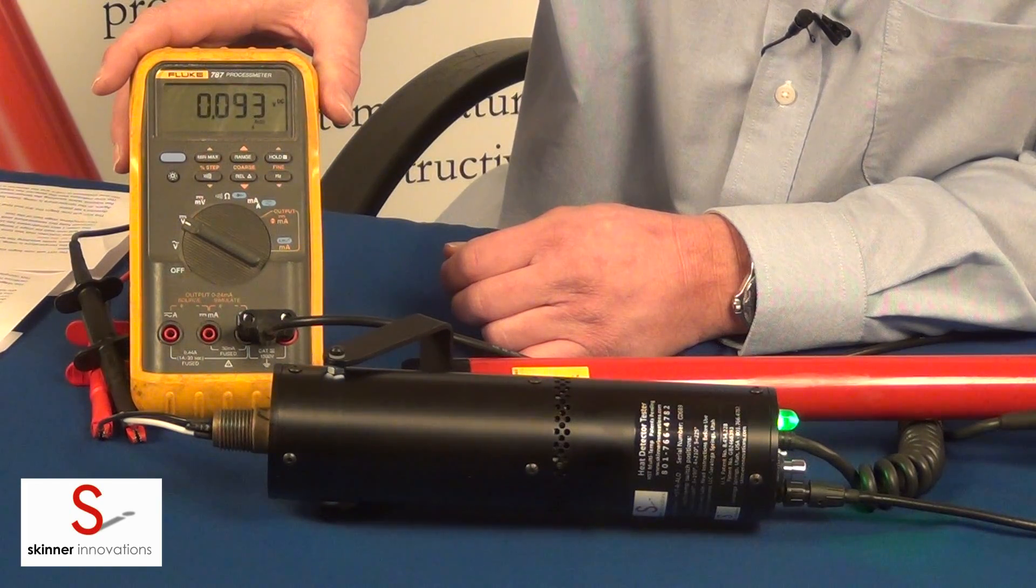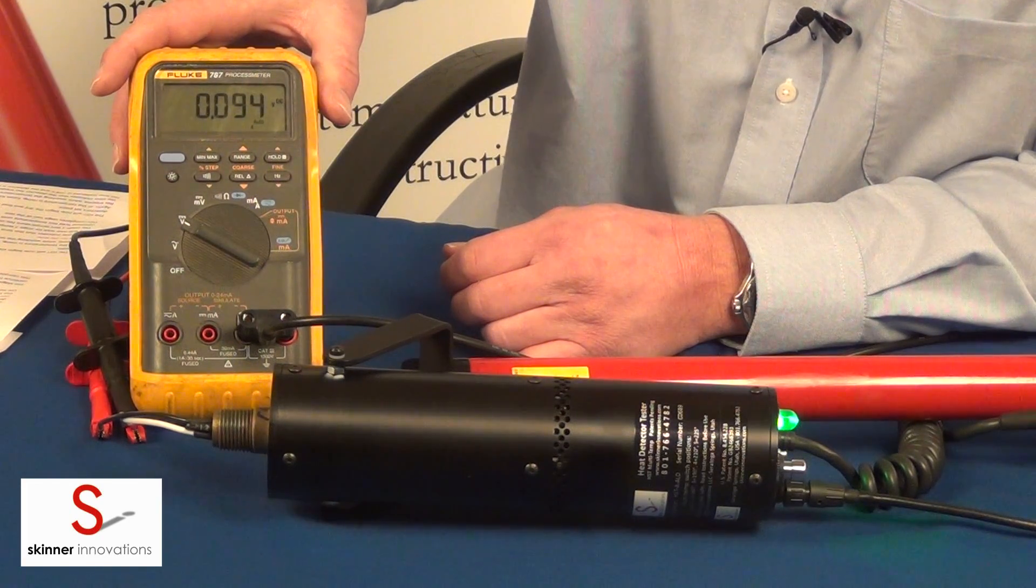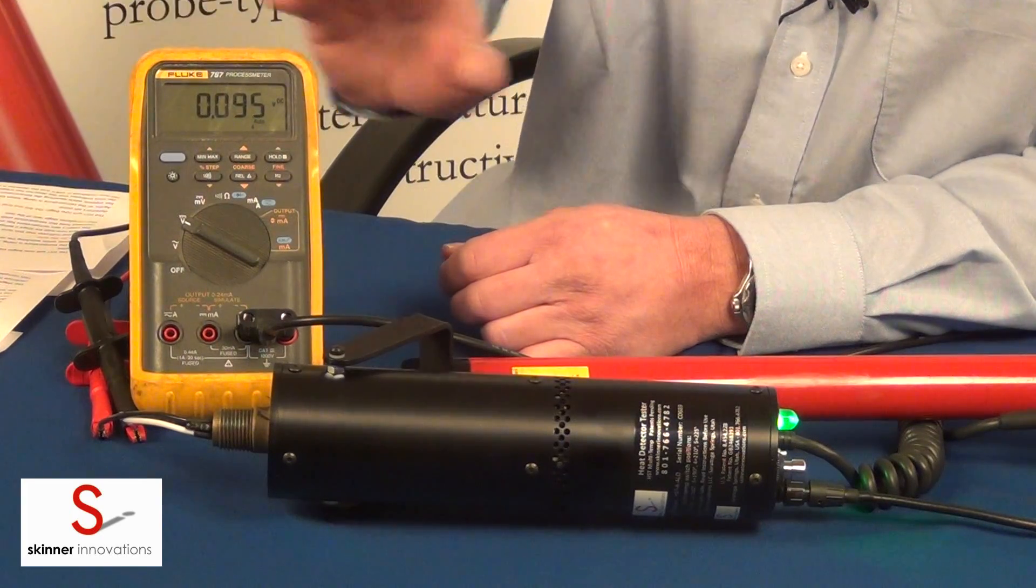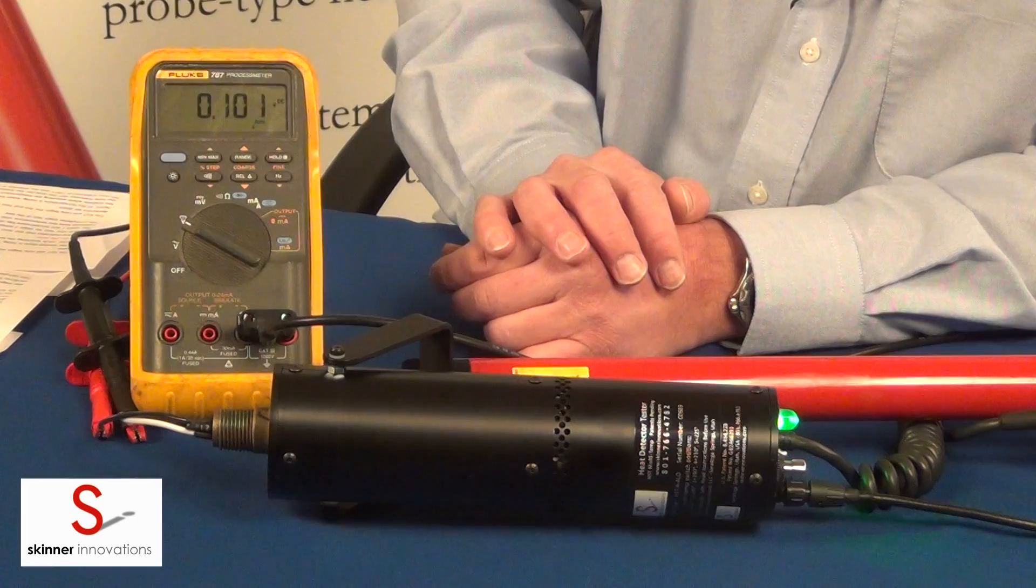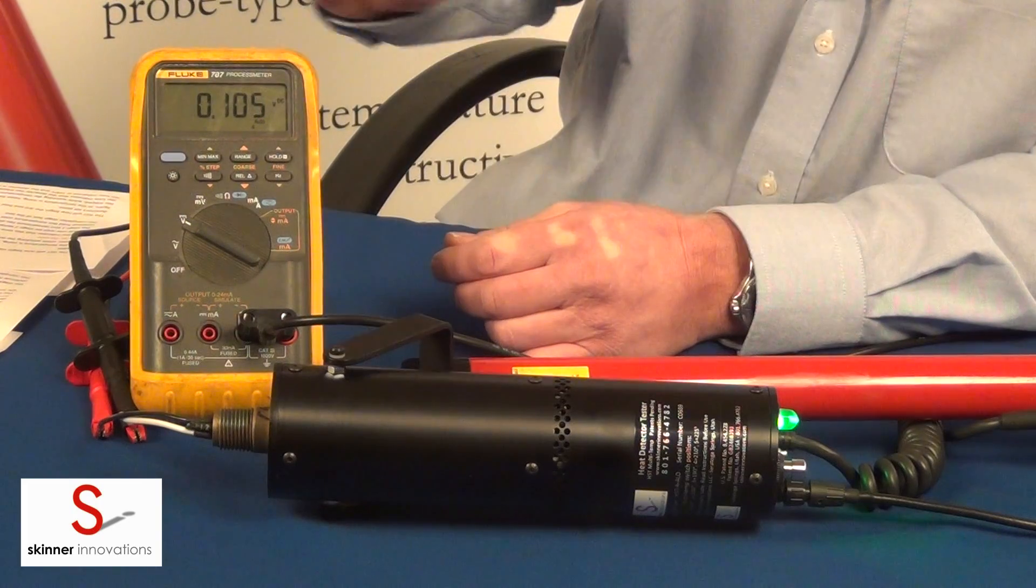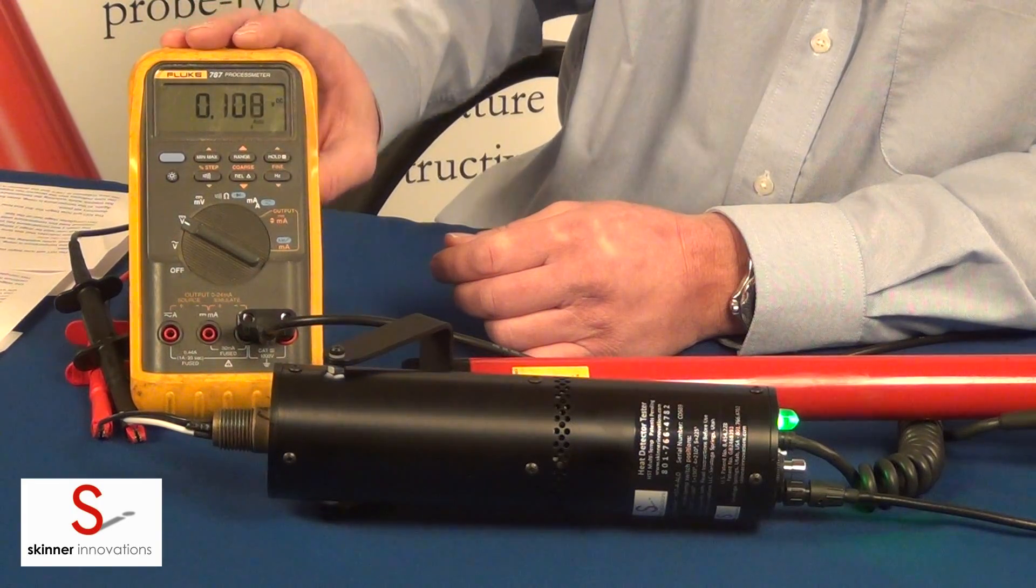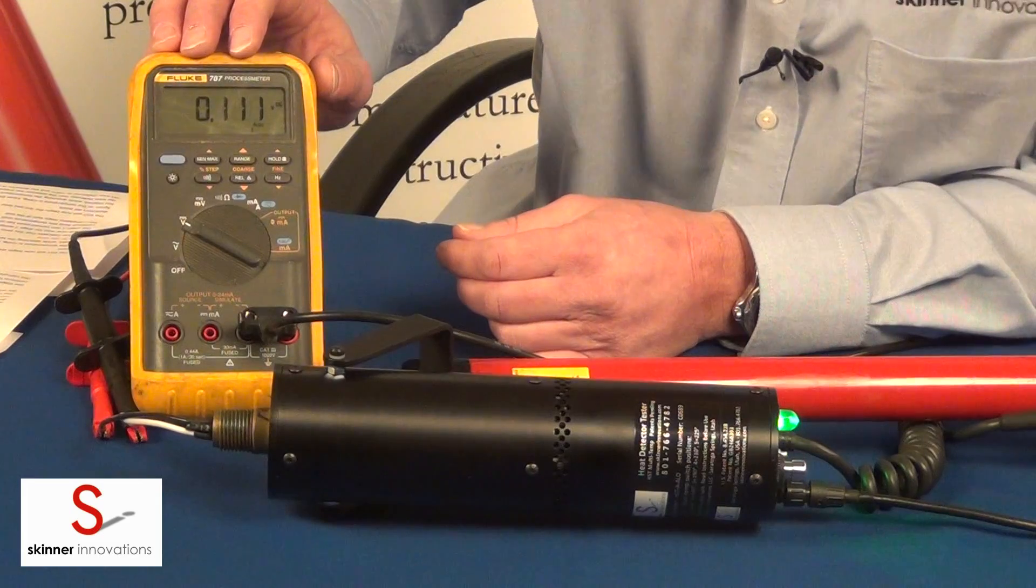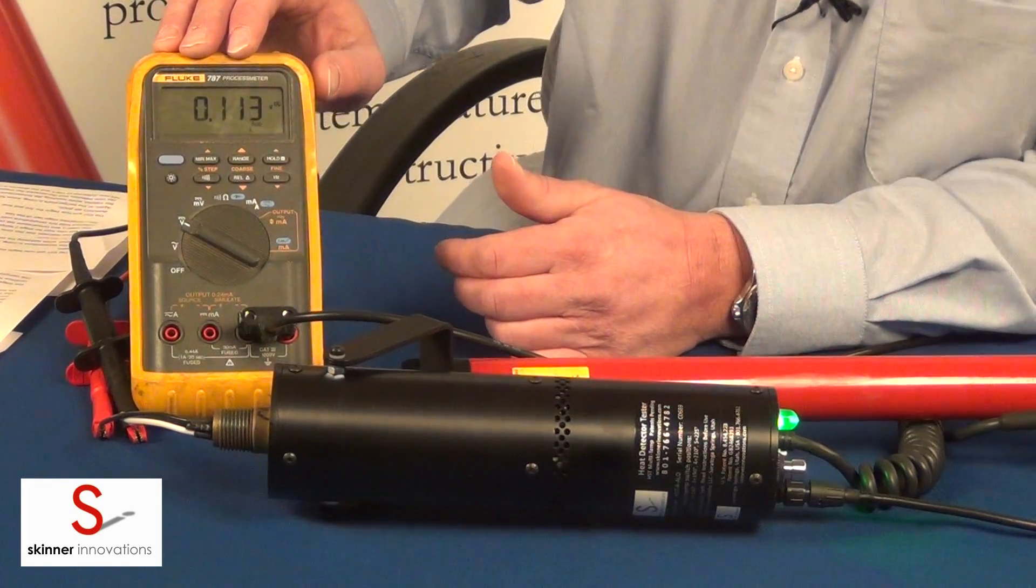So with the rate compensation verification we're going to heat up to 80 to 90 percent of the detector's set point and then we're going to hold there for three minutes. So as it's raising up here to that 80 to 90 percent temperature we should see a trip which we just did at around 110 degrees.